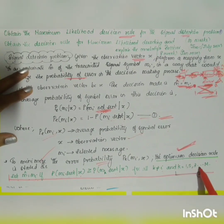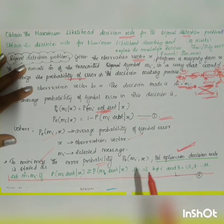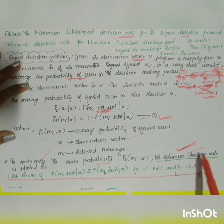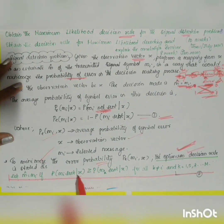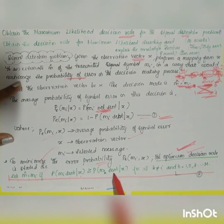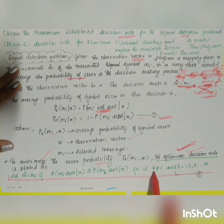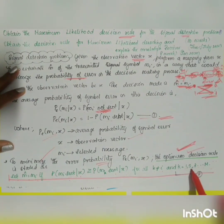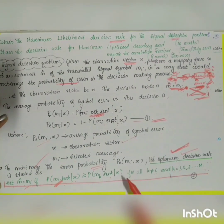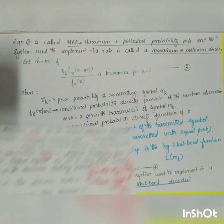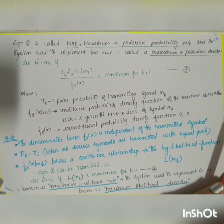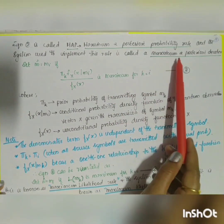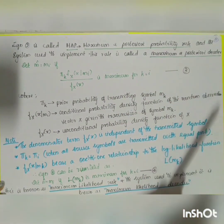The optimum decision rule says: in the output we want to get mi, so the probability P(mi sent | x) should always be greater than all other signals P(mk sent | x) for all k not equal to i. This equation 2 is called the Maximum A Posteriori (MAP) probability rule, and the system used to implement this rule is called the maximum a posteriori decoder.